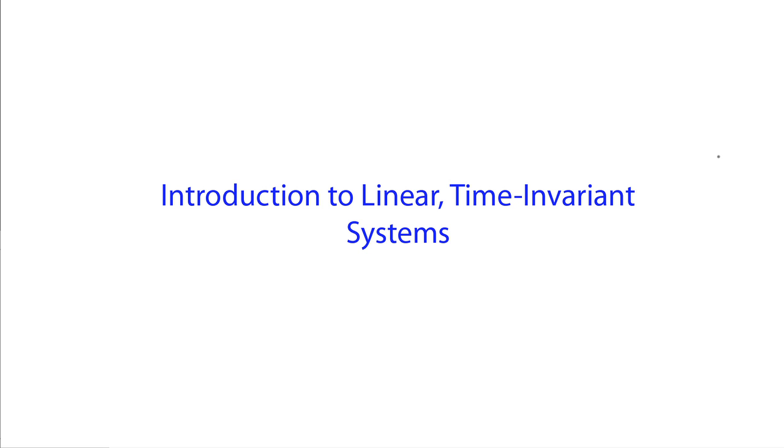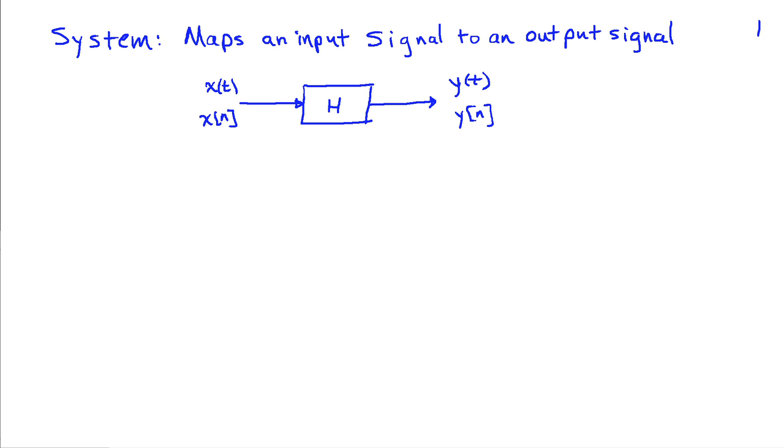Systems play an important role in signal processing, and in particular, systems that are linear and time-invariant, as we're going to look at in this lecture. A system maps an input signal to an output signal. We can have an input x of t that maps through some system to an output y of t, or an input x of n that maps to y of n.